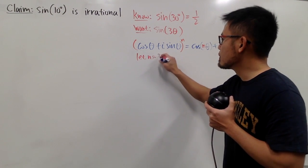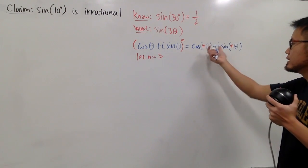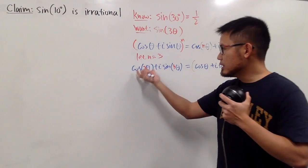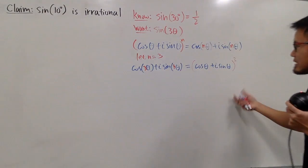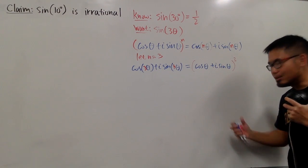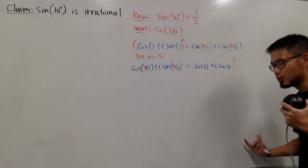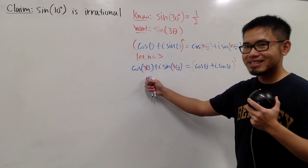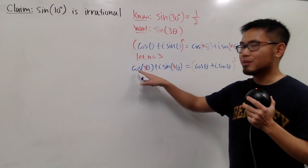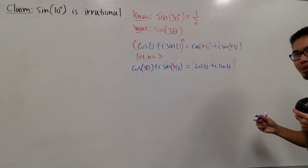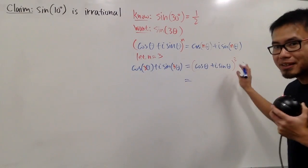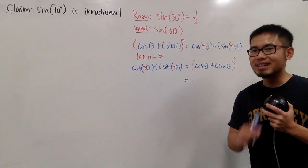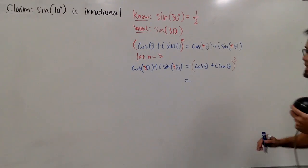We are talking about 3 theta, so I want n to be 3. Let's go ahead and let n equal to 3. On the left-hand side we have the real part and imaginary part. On the right-hand side, as long as we multiply everything out, we will have a real part and also the imaginary part. We can just set those equal to each other to get a formula. To multiply this out, we utilize Pascal's triangle — the numbers we're looking at are 1, 3, 3, 1 — the binomial coefficients for the third power.